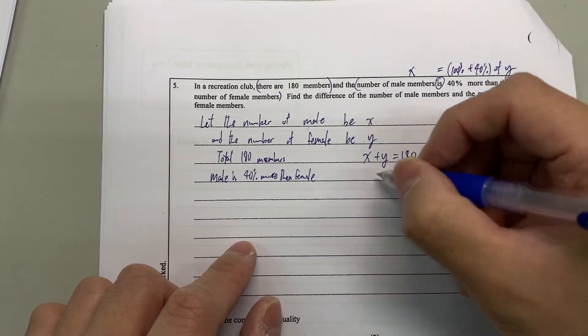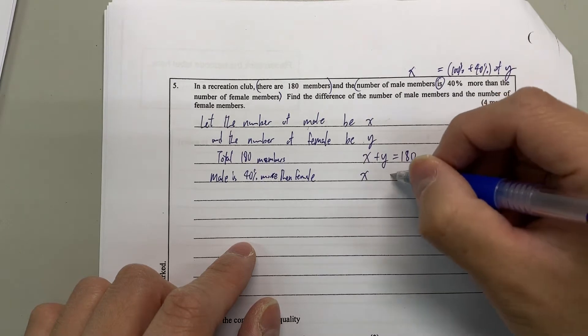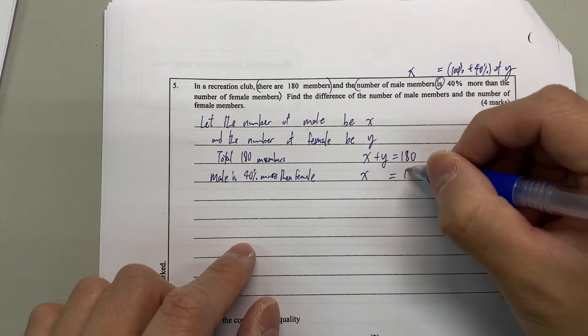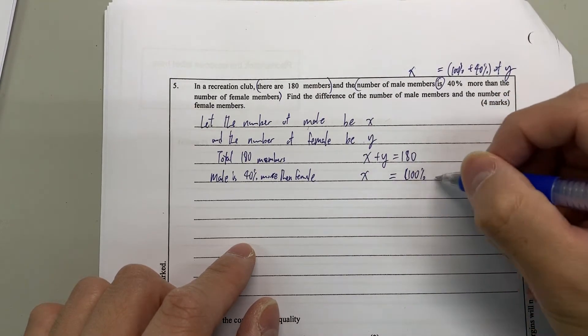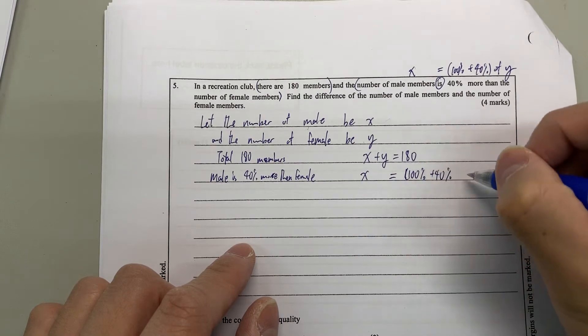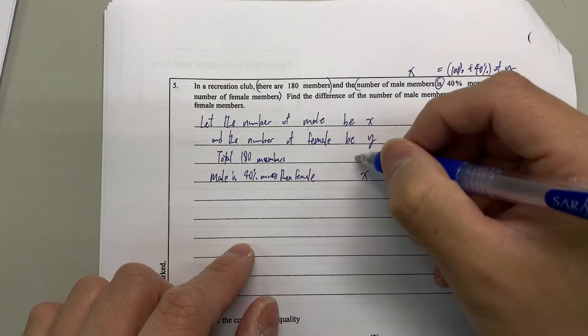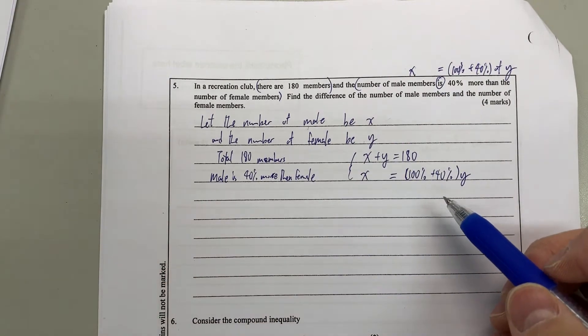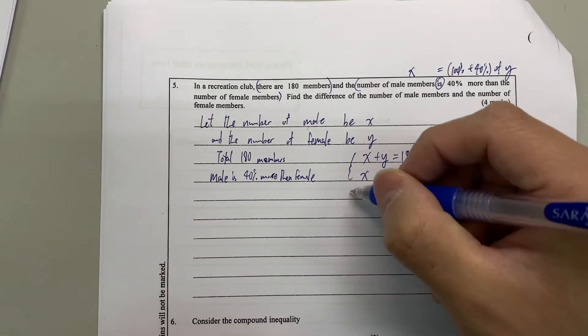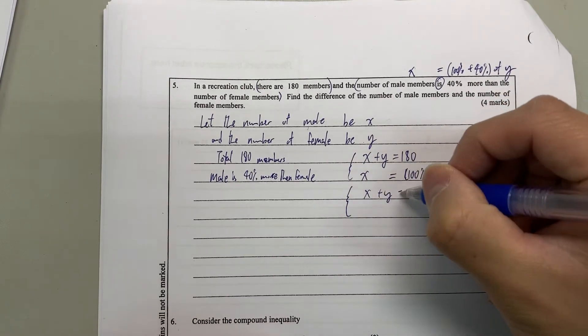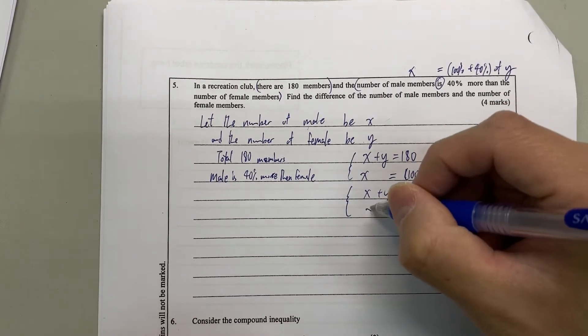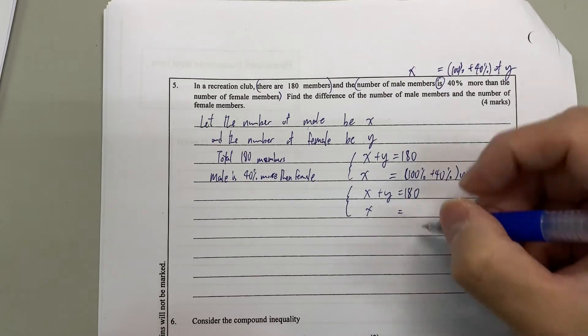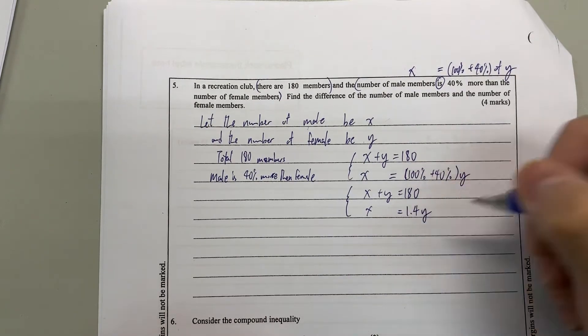So if we translate it, we should write x equals 100% plus 40% times y. We have two equations like this. And then for the second equation, maybe you can directly write x equals 1.4 times y.